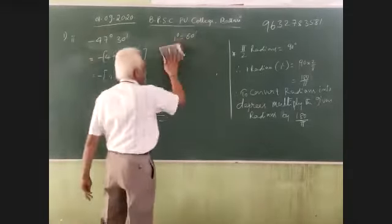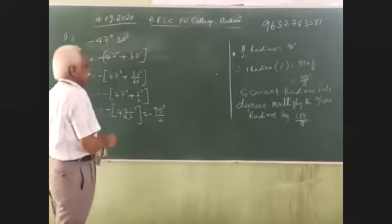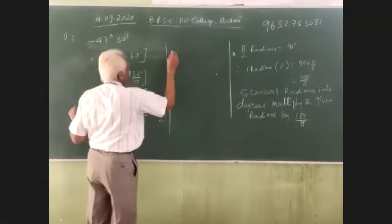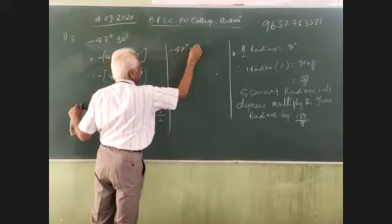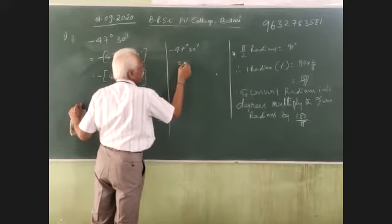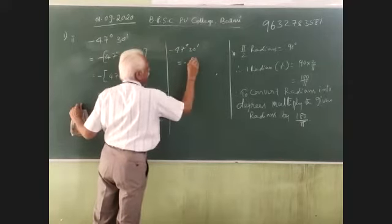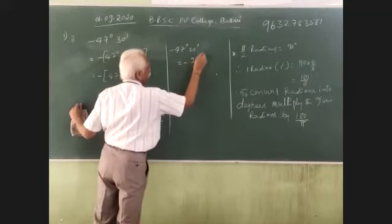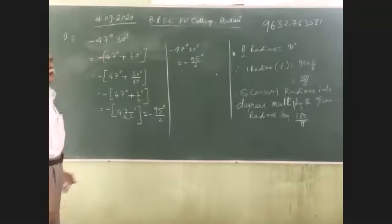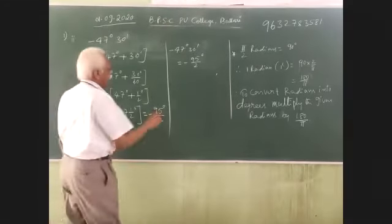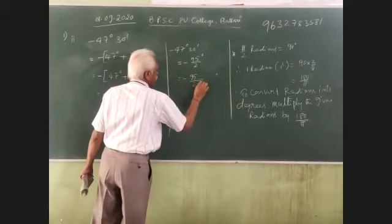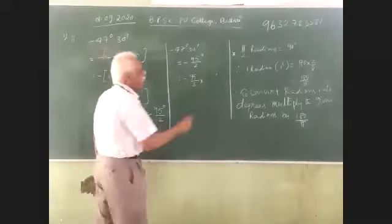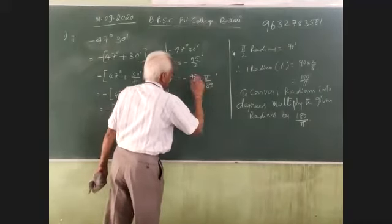We have to convert them into radians. Now minus 47 degrees 30 minutes is equal to minus 95 by 2 degrees. Minus 95 by 2 into π by 180.